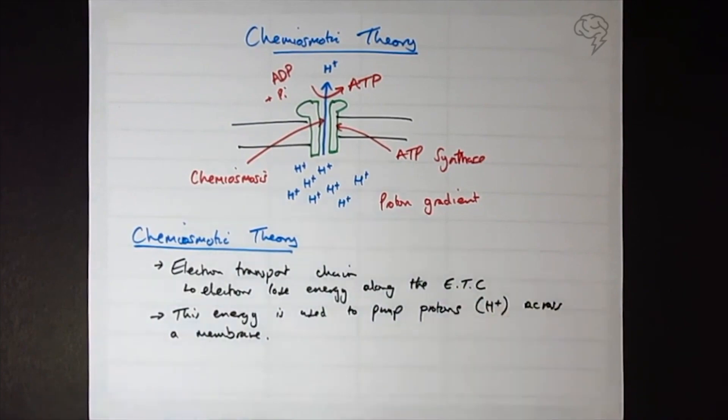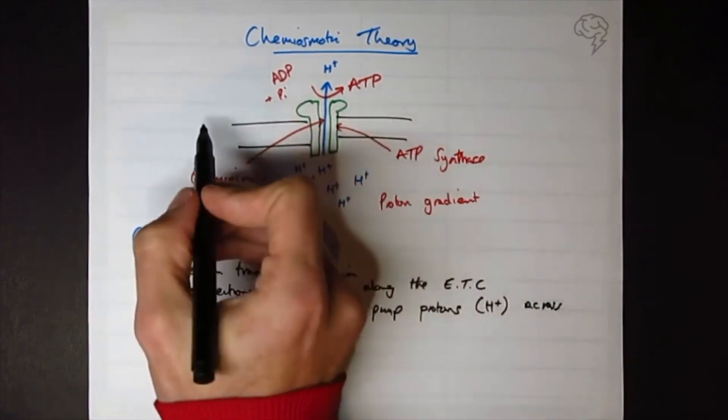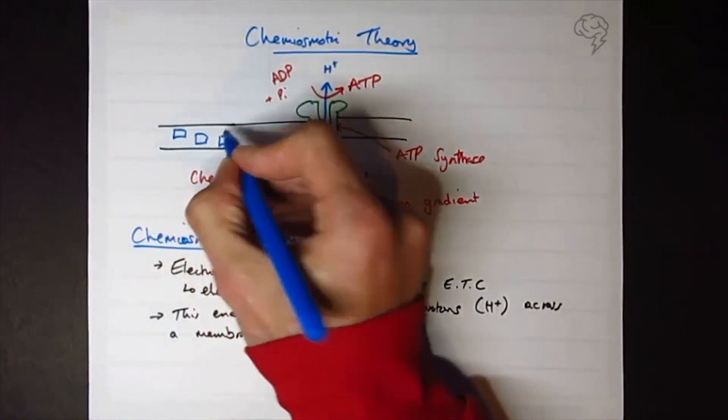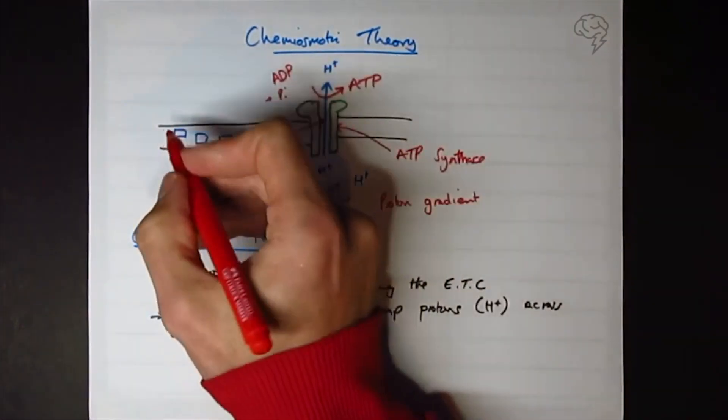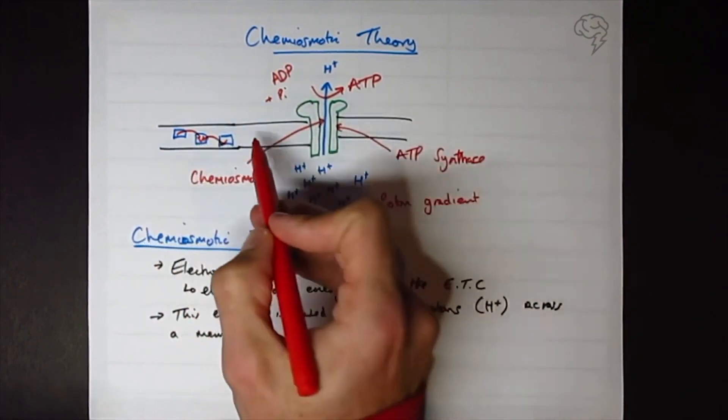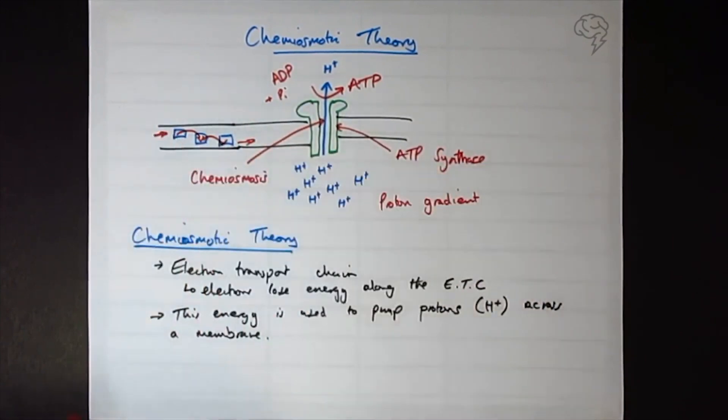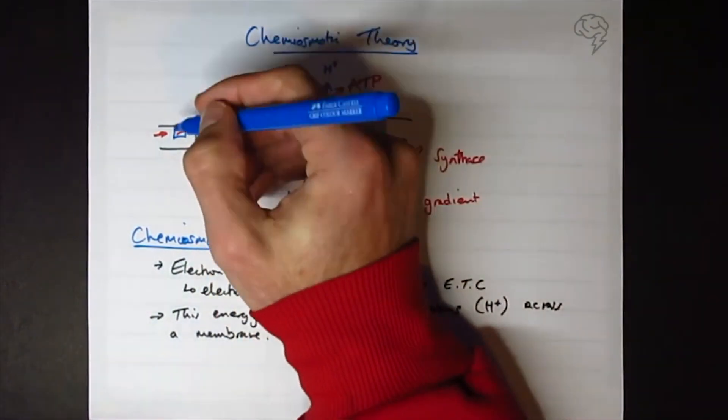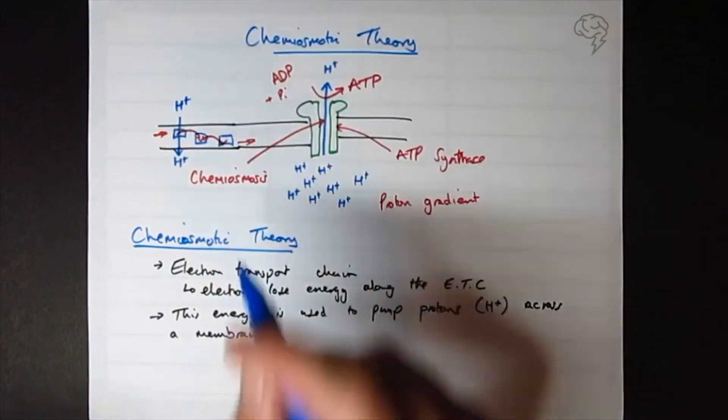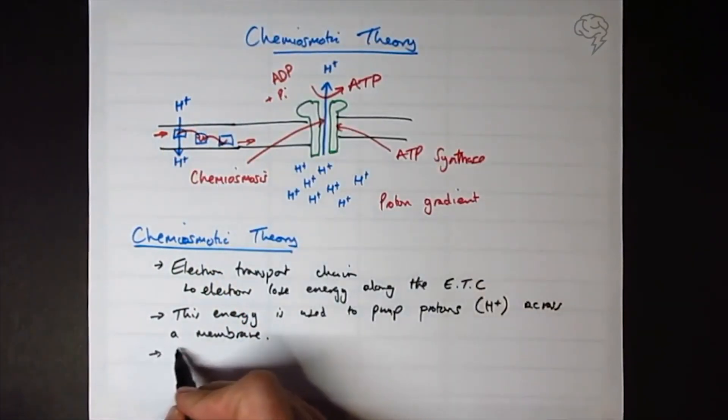So we basically are going to use - in fact, let's add it onto this diagram here. I'm going to have some proteins in the membrane, and the electron is going to be flowing through them. It's going to be losing energy, cascading down, and that is going to be used to pump these protons across in the first place. So we can say this creates a proton gradient.